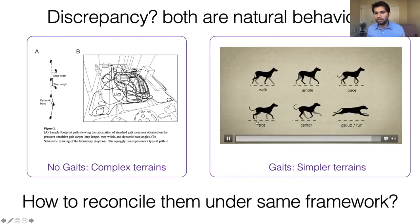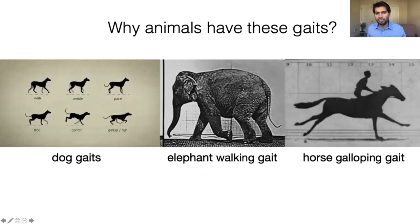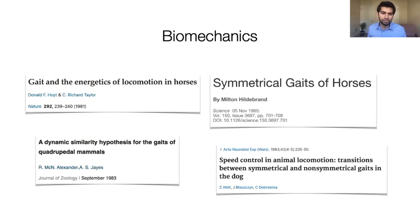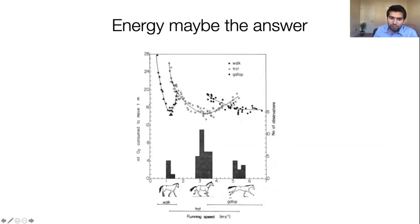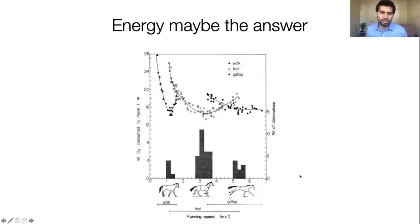Why do animals have these gates? One of the most interesting hypotheses from biomechanics is that energy is the reason. In a plot from 1981, energy is measured via oxygen on the y-axis and speed on the x-axis. As speed increases, different gates become energy efficient at different speeds: walking is efficient only at low speed, trotting at medium speed, gallop is most efficient at high speed. Animals have evolved to conserve energy by showing these gates. Can we use this insight to build robots that capture this whole range?